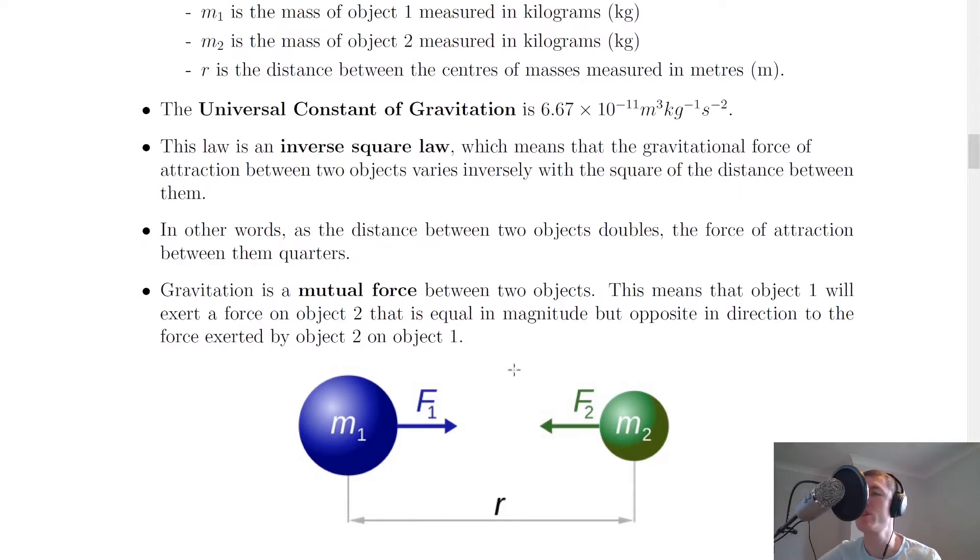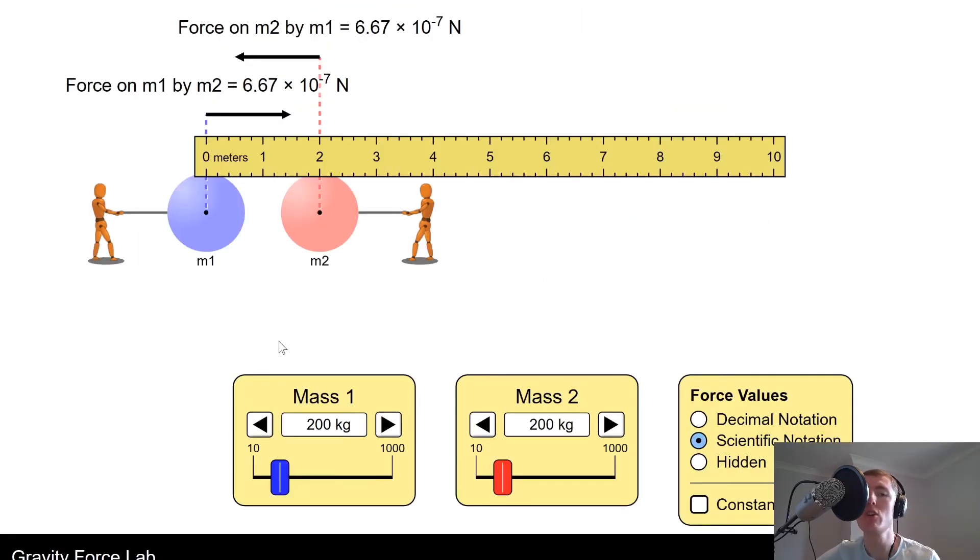Just to help you visualize this, I'm going to show you an animation. Here we've got two masses, m1 and m2, both at 200 kilograms. You'll see the center of mass of this one is at 0 meters, and the center of mass of this one is at 2 meters. So initially they're 2 meters apart.